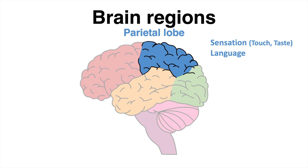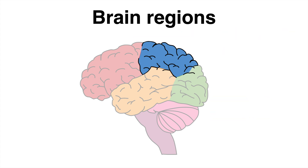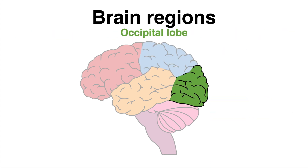The most posterior part of the neocortex is the occipital lobe. Neurons within this region are mainly responsible for our vision — what our eyes detect is converted to an image and interpreted within the occipital lobe.